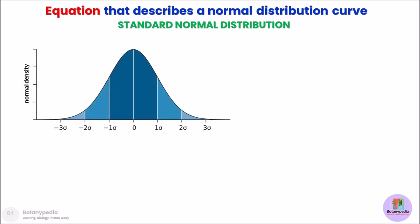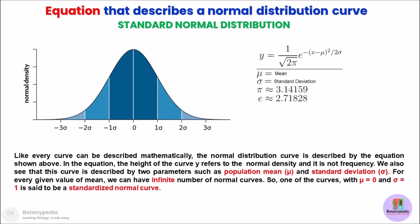Like every curve can be described by a mathematical equation, there is an equation that describes a normal distribution curve. The normal distribution curve is described by an equation in which the height of the curve — if we are measuring the height at any particular point — is depicted by y, which is referred to as the normal density, not actually the frequency. We can also see that there are two parameters: the population mean and the standard deviation, which are used to describe this equation.